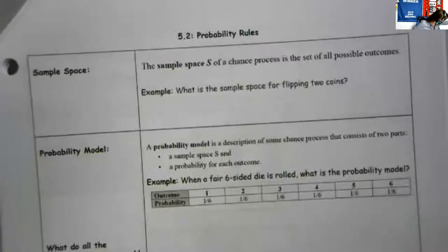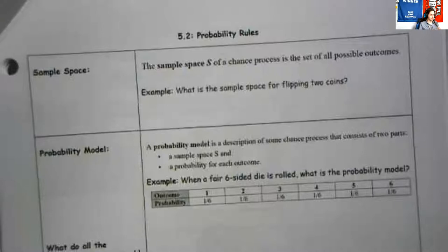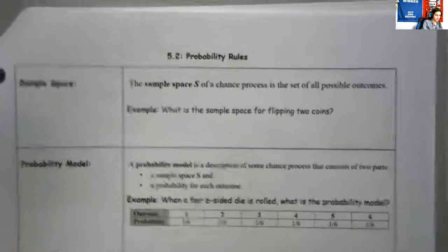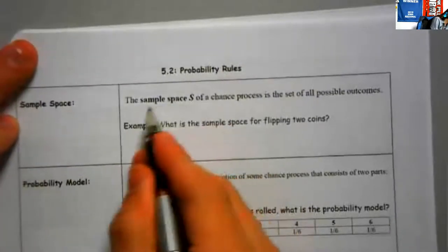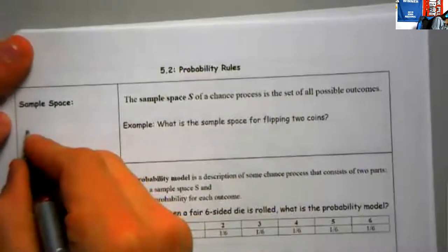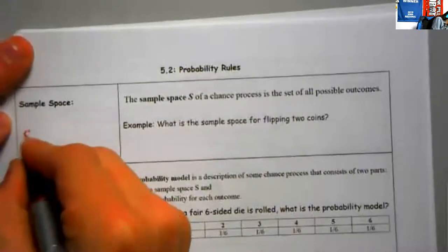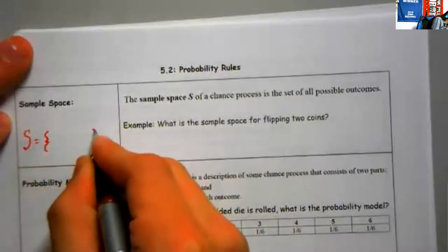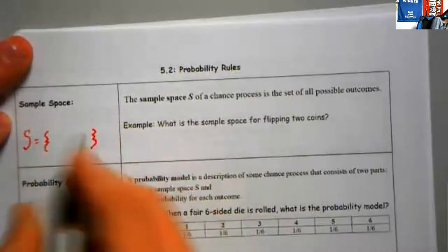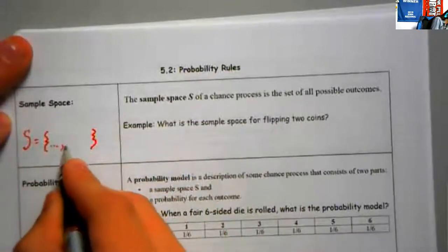5.2 notes. We are talking now about probability rules — what are some of the rules for probability spaces, and what are probabilities? So we have to define some things first. The first thing we have to define is the sample space S, which we call capital S. This is the set of all outcomes that could occur — all the ways that something could happen.